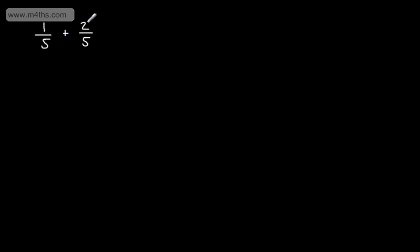Let's start with adding two fractions. Let's say we have 1 over 5, and we want to add to that 2 over 5. We can see this fraction has a numerator of 1 and a denominator of 5, this one a numerator of 2 and a denominator of 5. So they both have the same denominator. If that's the case, all I need to do is add the numerators. So 1 plus 2 is going to give me 3, so we'd end up with 3 over 5.